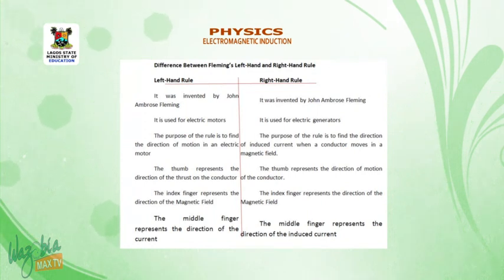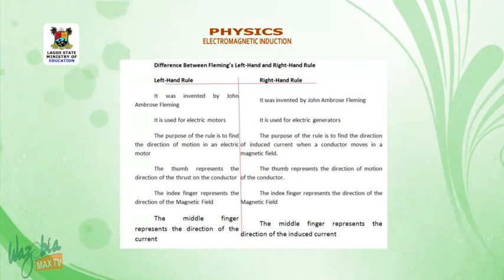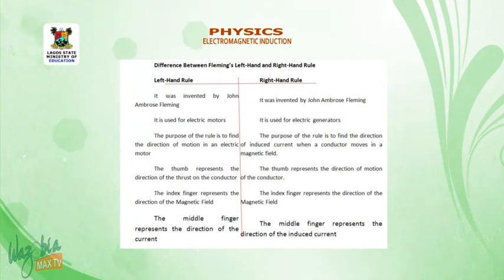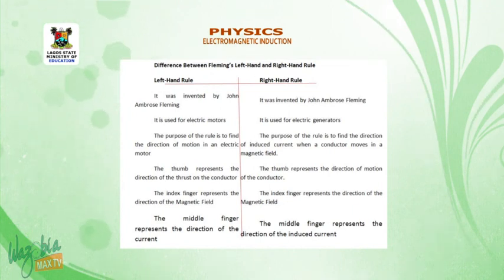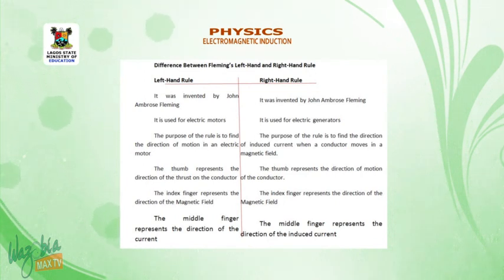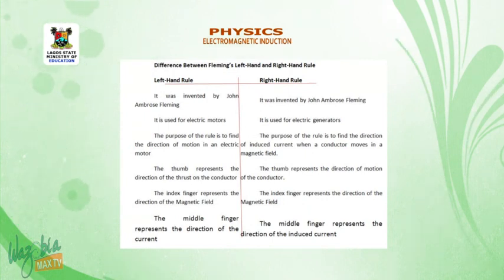Under the left-hand rule, the index finger represents the direction of the magnetic field, and the middle finger represents the direction of the induced current. Under the right-hand rule, the thumb represents the direction of the current. Under the left-hand rule, the thumb represents the direction of induced current.